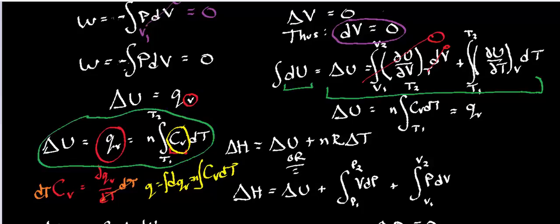It's isochoric. dV is 0, so this dV is 0 right here. So this whole integral right here, this first one, cancels out, and all you're left with is the second one right here.